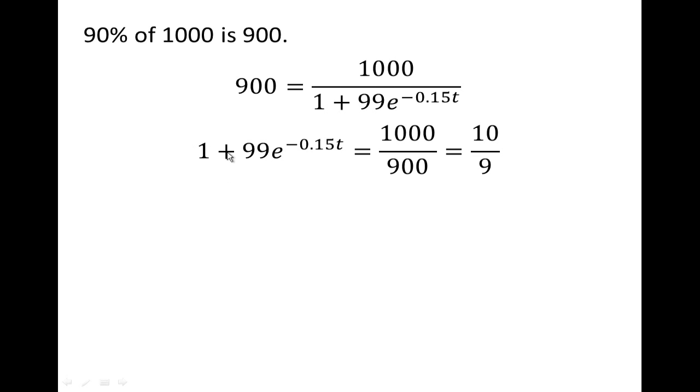If we subtract 1 from both sides, 10 ninths minus 1 is 10 ninths minus 9 ninths, which is 1 ninth. Now we divide both sides by the 99. So e to the negative 0.15 t is 1 over 99 times 1 over 9, or 99 times 9 is 891, and so we end up with the opposite of negative 0.15 t is the natural log of that number.